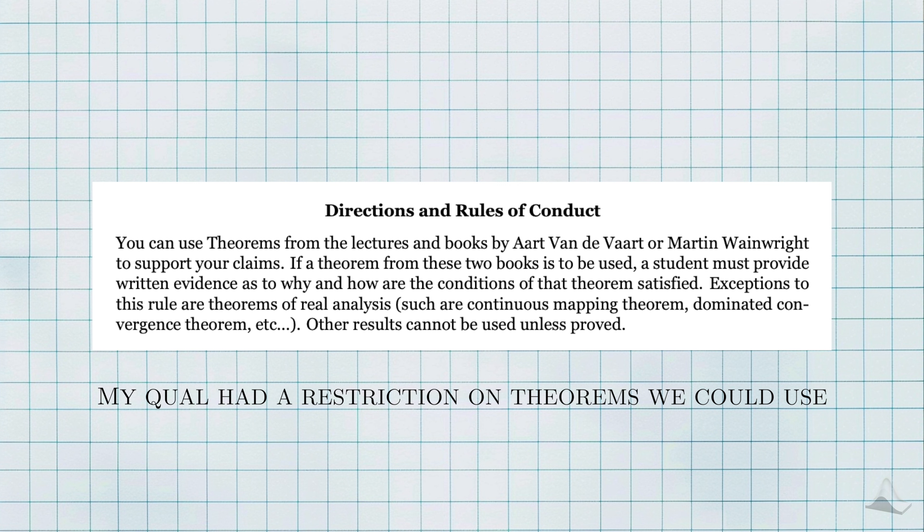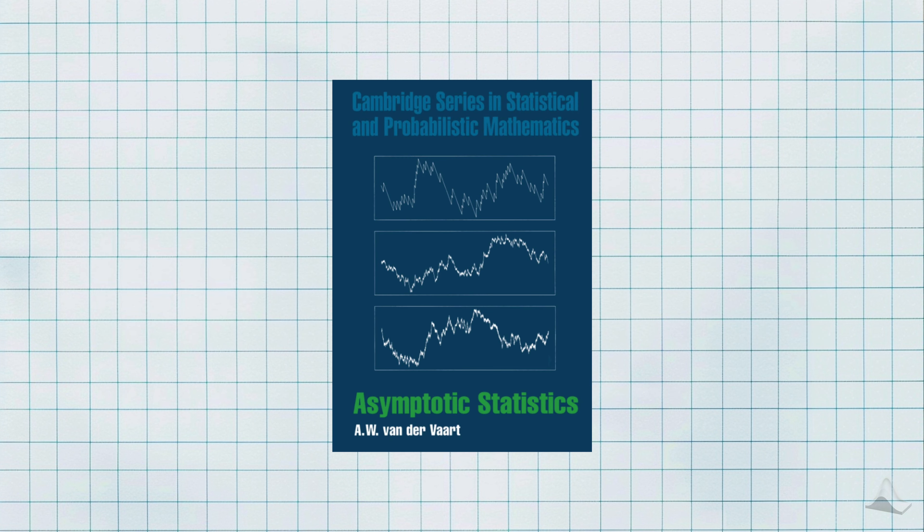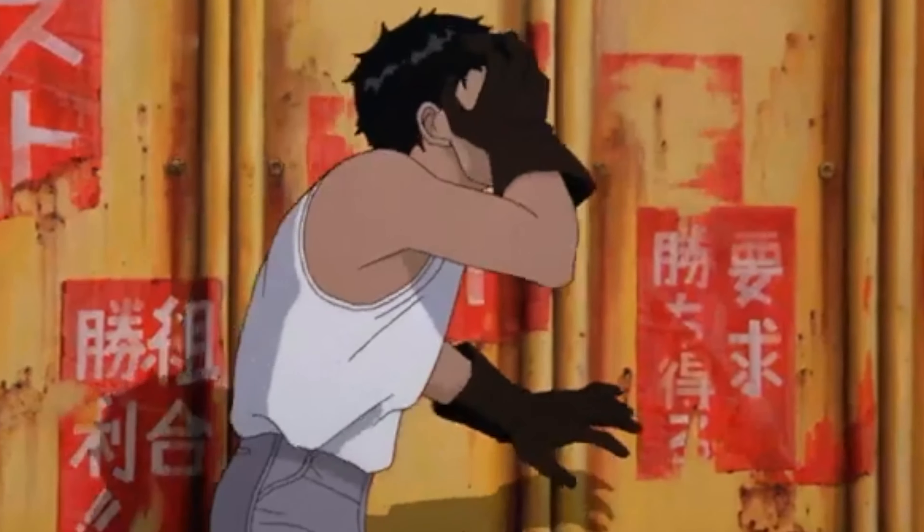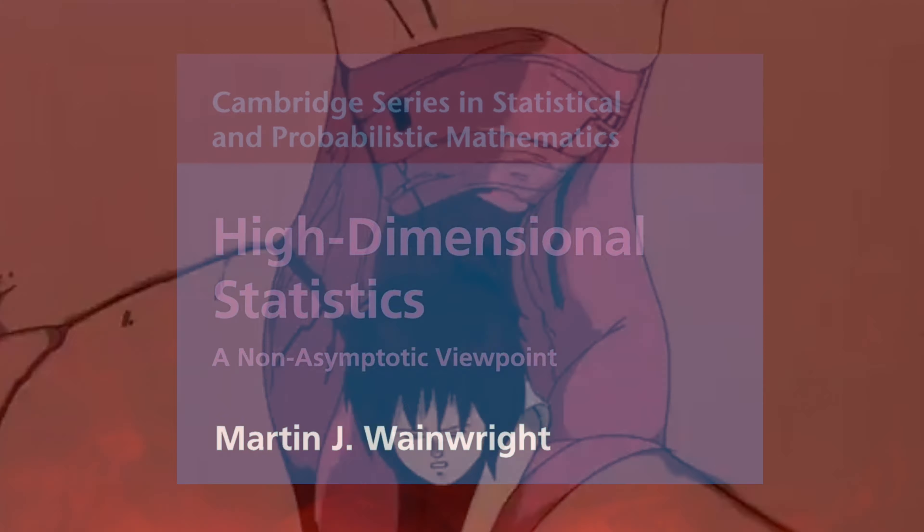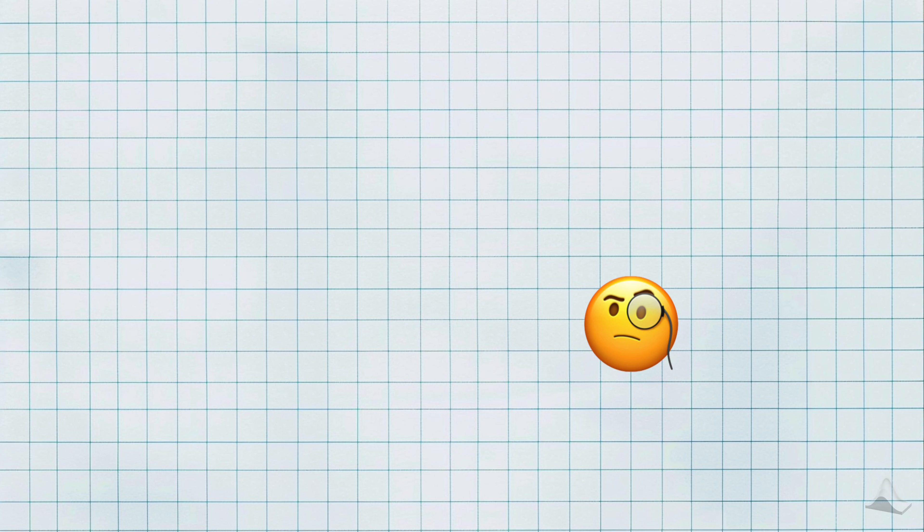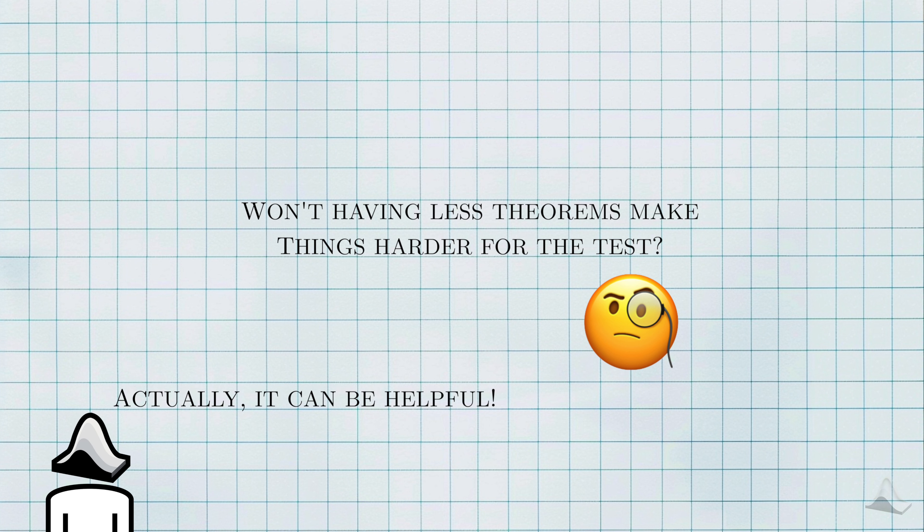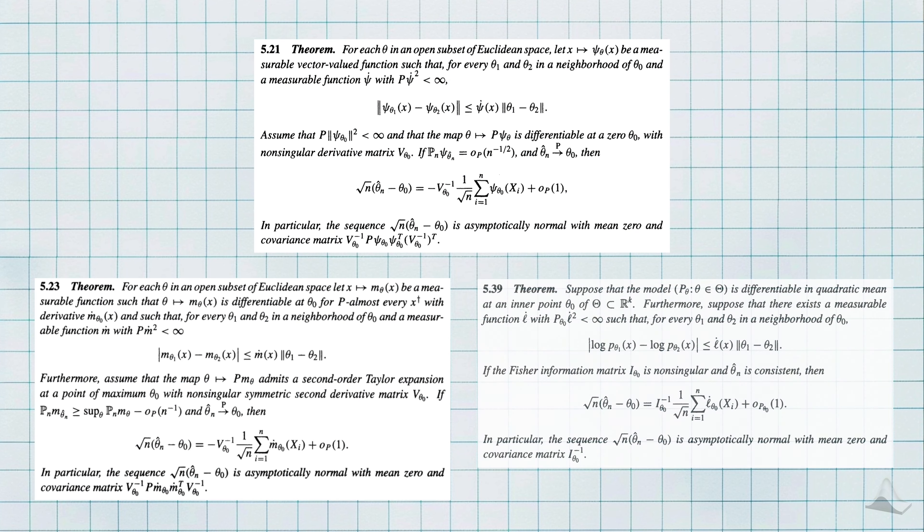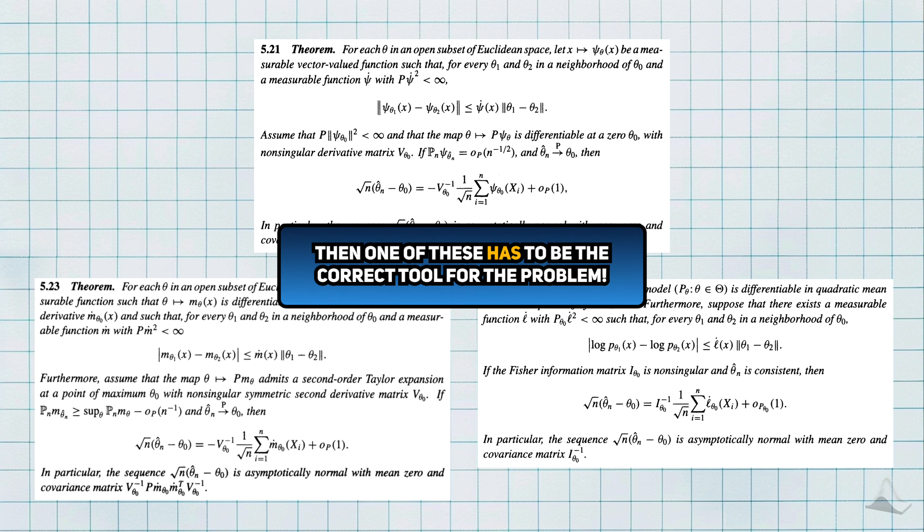I can't speak for other departments, but for my exam, we were actually restricted on what we could use for the exam. We were only allowed to use theorems from textbooks that we used for class. For me, it was Asymptotic Statistics by Vandervaart and another book I can't bear to bring up. On one hand, it can seem like having less theorems makes it harder to solve a problem on the exam, but I actually think this restriction helps more than it hurts. This is because of the paradox of choice.